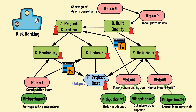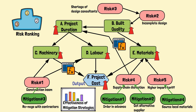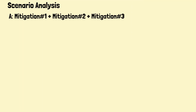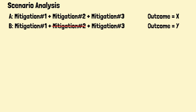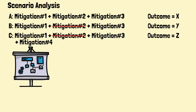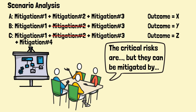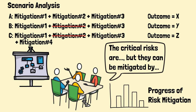We can also use the influence diagram to assess the effectiveness of mitigation strategies. After assessing the post-mitigated risk impacts, we can propagate revised impacts through the influence diagram to understand the project cost outcome. We can do scenario analysis by adopting different mitigation strategies. Additionally, we can use the influence diagram to communicate risks to stakeholders and to monitor the progress of the mitigation strategies.